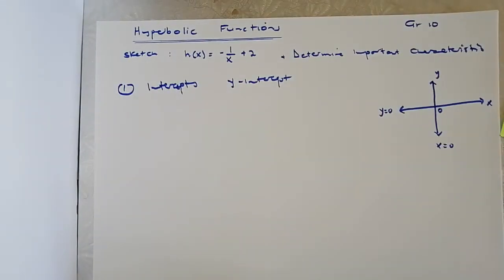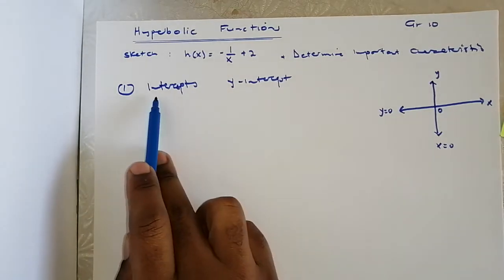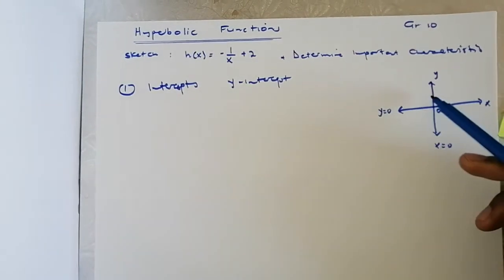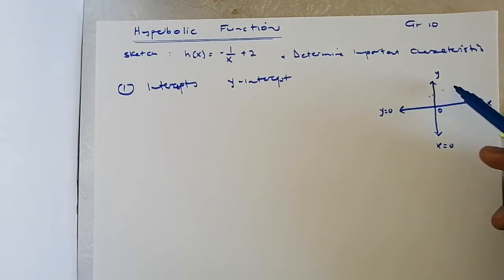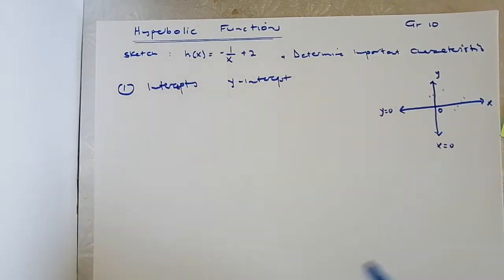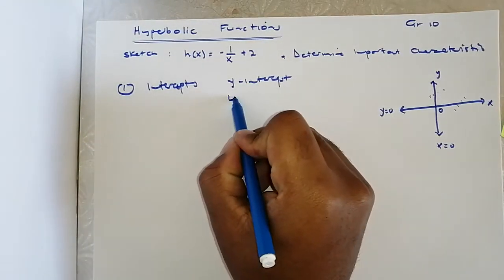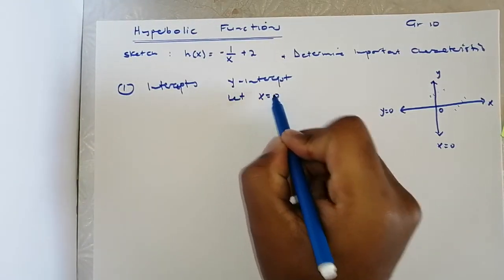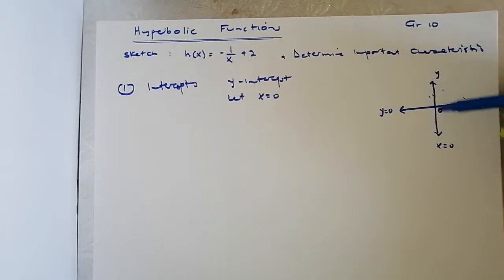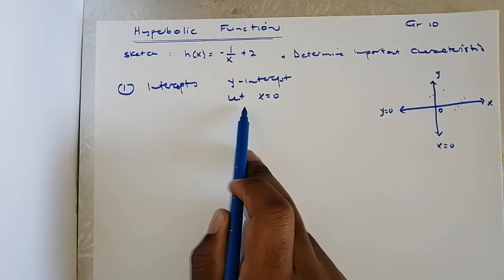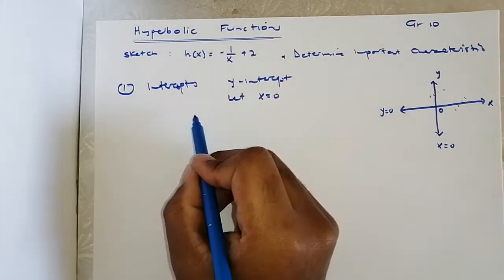Go grab your pen and paper and let's do this together. First of all, we're going to determine the intercepts — the intercepts are where the graph will actually cut either the y-axis or the x-axis. First, we're determining the y-intercept. At the y-intercept we let x equal to zero, because that is where the graph will cut the y-axis, and the equation of the y-axis is x equals zero.